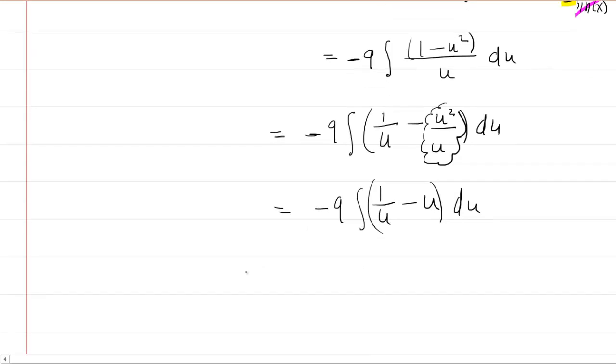Now we are ready to integrate. And recall that the integral of 1/u is just the natural log of the absolute value of u. And then we subtract the integral of u. That's just a basic power rule. So right now we have u to the 1. You'll add 1 to the exponent to make u to the power of 2, and then put that over the new exponent of 2. Don't forget your constant of integration.